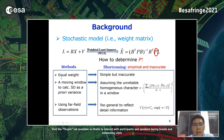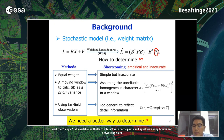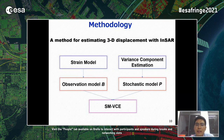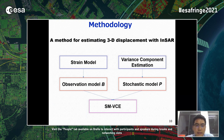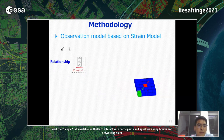Besides the observation model, the weighting matrix is also very important in the weighted least squares method—the stochastic model represents the weighting matrix P. Several methods can determine P: equal weight, a moving window, or using far-field observations. However, these methods are somewhat empirical, and a better way is needed to determine P. We therefore propose a method abbreviated as SMVCE that focuses on establishing both the observation model B and the stochastic model P.